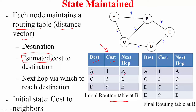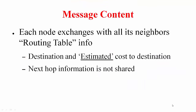Getting back to the protocol: what is the actual message content that is exchanged? Each node exchanges information only with all its neighbors — just neighbors, not others. It is routing table information: the destination and the estimated cost to the destinations. Note that the next hop information is not shared. For example, node B exchanges only this information with its neighbors A, C, and E.